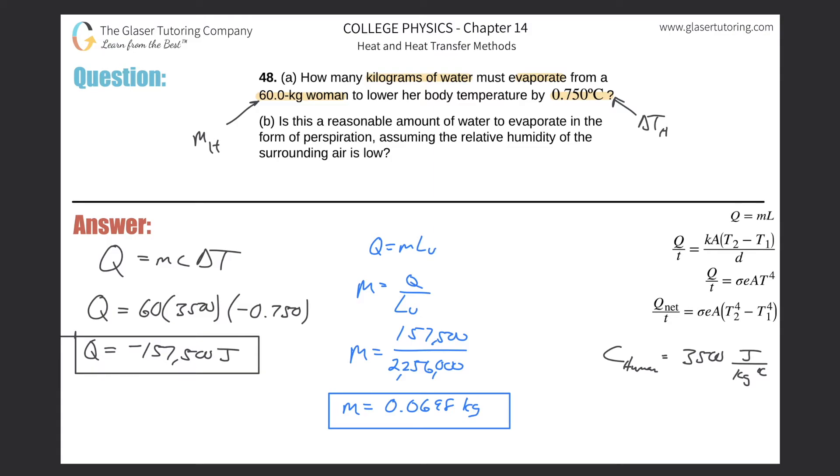And then letter B, what are they saying here? Is this a reasonable amount of water to evaporate in the form of perspiration? Okay. So I guess the best thing to kind of do would maybe, this is the mass of the water that's evaporating. But sometimes, we want to know the size, so to speak, of that mass.